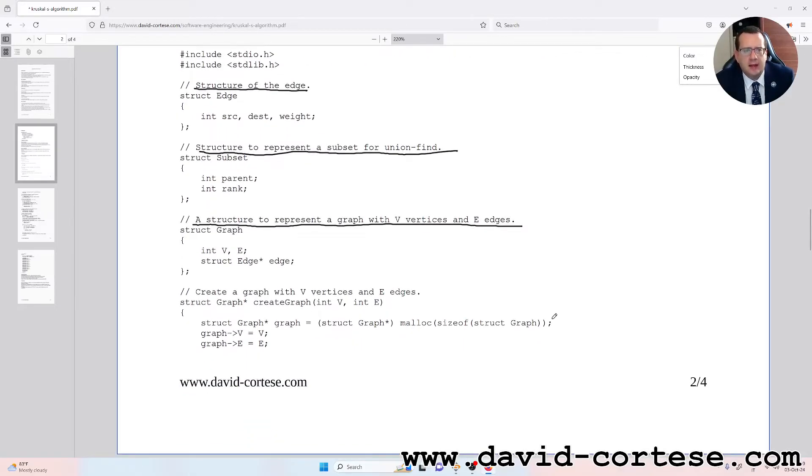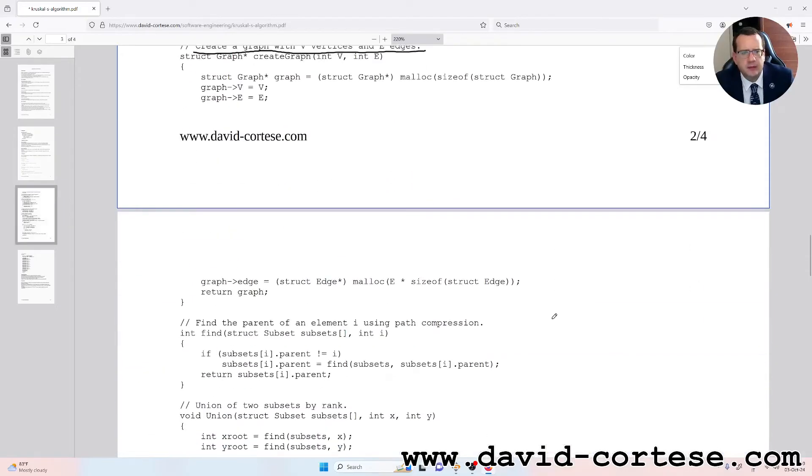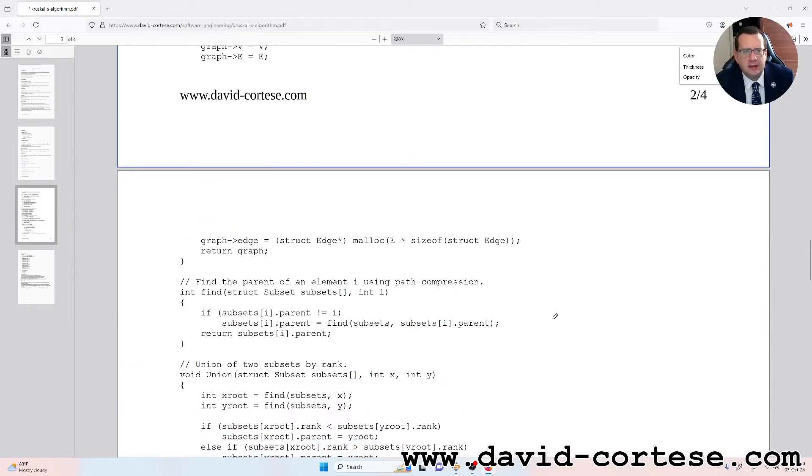Then here you can find the structure to represent a graph with V vertices and E edges. Then create a graph with V vertices and E edges. Find the parent of an element using path compression.